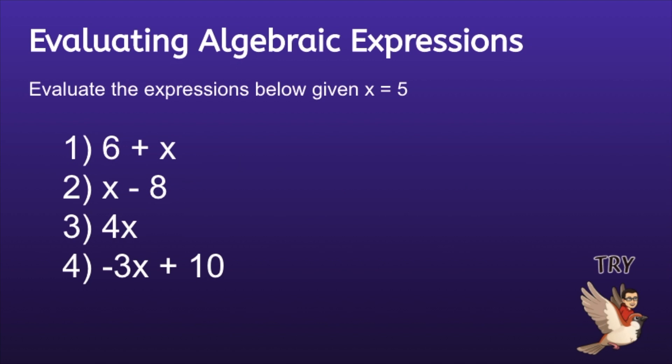Okay, let's take a look. Number 1: 6 plus x. After substituting, we will have 6 plus 5, which is equal to 11. Number 2: x minus 8. After substituting, we will have 5 minus 8. After applying keep change change, we will have the expression 5 plus negative 8, and 5 plus negative 8 is equal to negative 3.